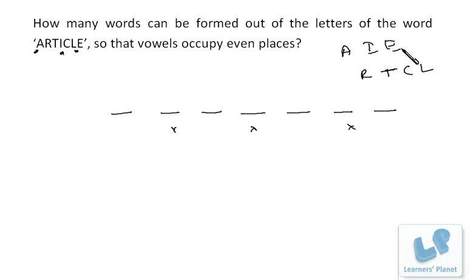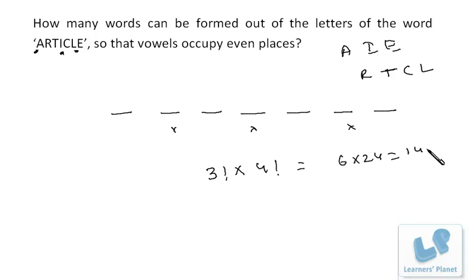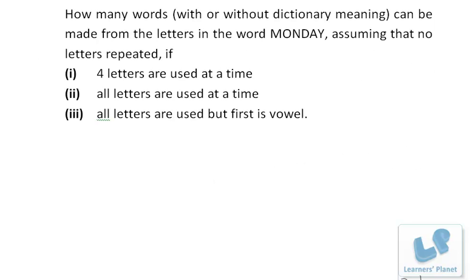The four consonants and three vowels must be arranged so vowels go in the 2nd, 4th, and 6th positions. We have three positions for three vowels, which can be arranged in 3! ways. The four consonants fill the remaining four positions in 4! ways. So the total is 6 × 24 = 144 ways.